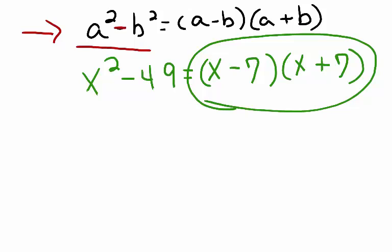Sometimes the examples can be a little bit more involved. Let's take a look at one more. Suppose I have 256x to the fourth minus one.